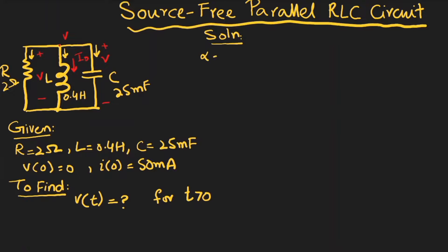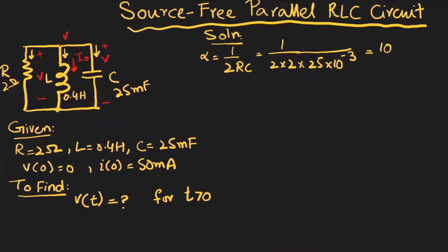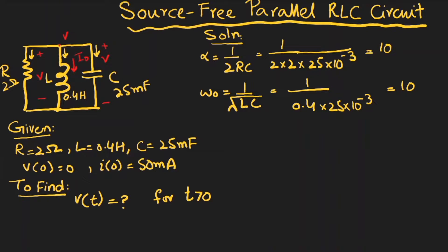First, we find the values of alpha and omega-naught. Alpha equals 1 over 2RC, so 1 over 2 times 2 ohms times 25 millifarads, which gives 10. Omega-naught equals 1 over the square root of LC, which is 1 over the square root of 0.4 times 25 times 10⁻³, and that also equals 10.